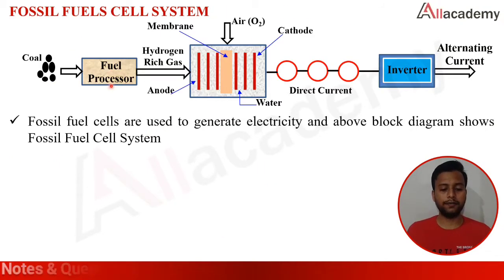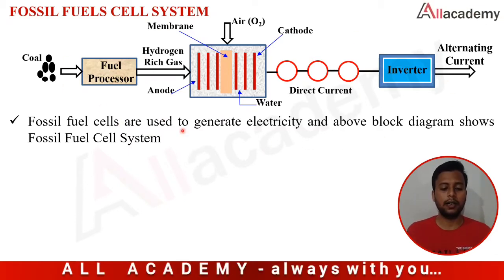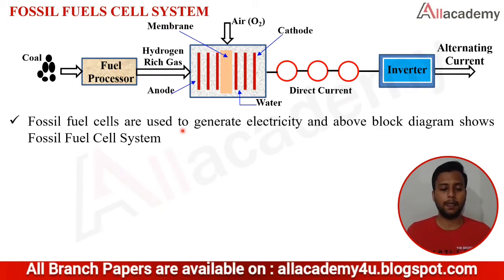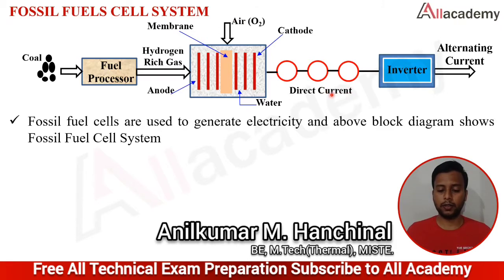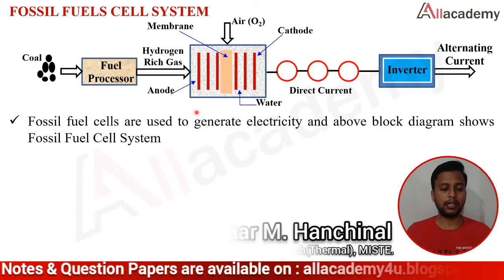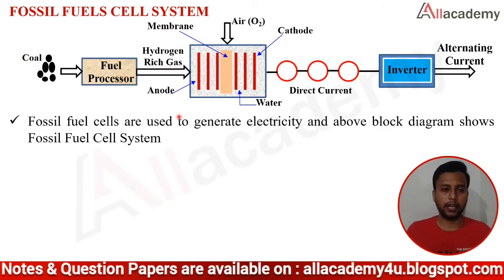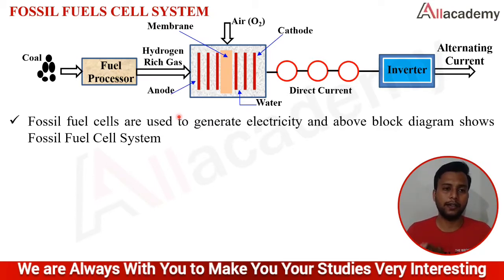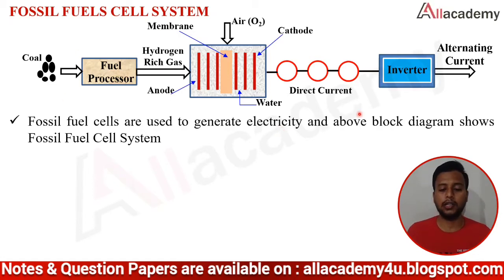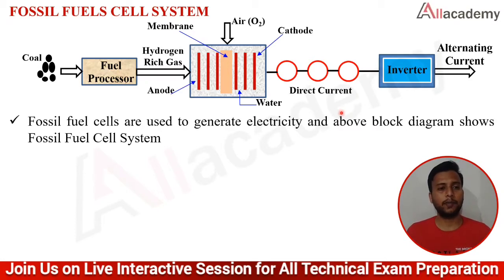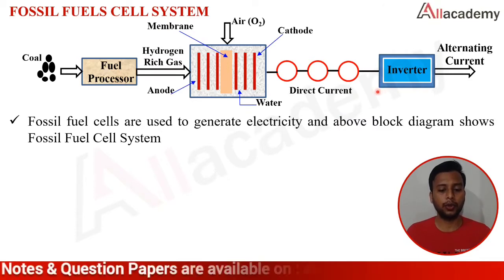The fossil fuel cell system is an energy conversion system shown as a block diagram. Coal is fed into a fuel processor, which also involves membranes, anode, cathode, air supply, a DC operator, and an inverter from which current is output. The fuel processor converts the coal into a hydrogen-rich gas. This hydrogen-rich gas is then fed to the fuel cell. This entire unit is called the fossil fuel cell system, and exam questions often ask for a neat sketch explaining this system.